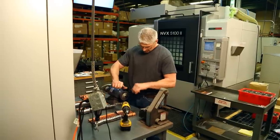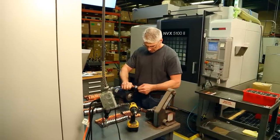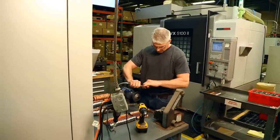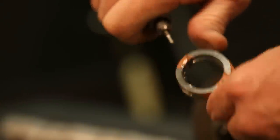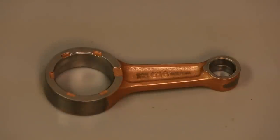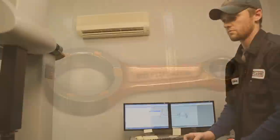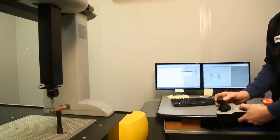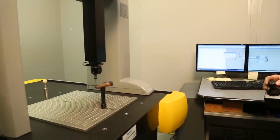While the mill operator inspects the rods by hand throughout his production run, at the beginning of each new production batch and the start of each new shift, one rod from each fixture station in the mill, three total, are sent back to the quality control department for inspection on the coordinate measuring machine.